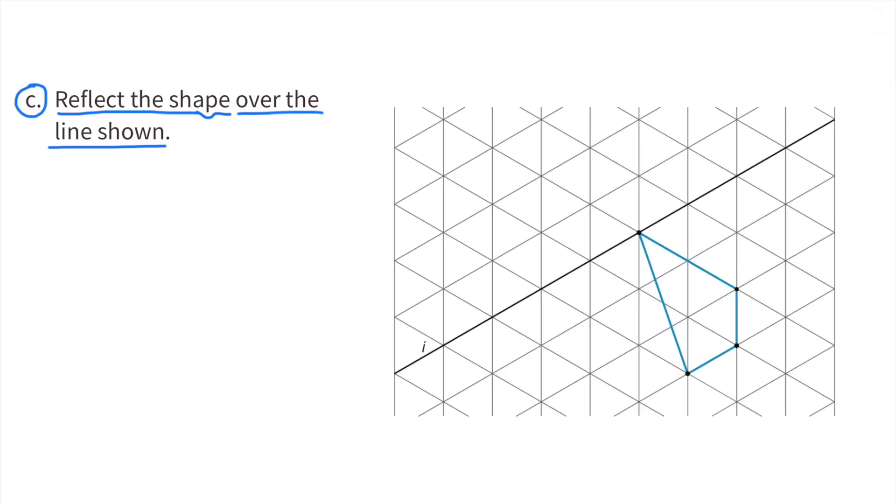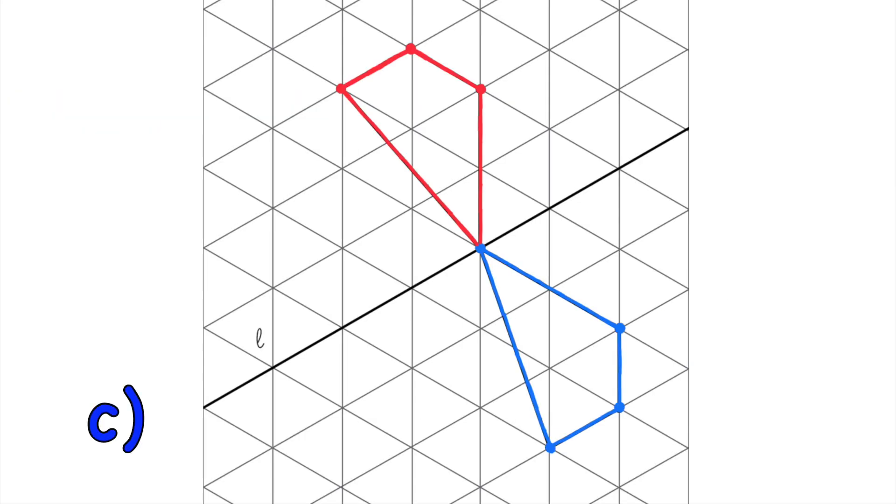C. Reflect the shape over the line shown. Represented in red is the reflection of the original shape.